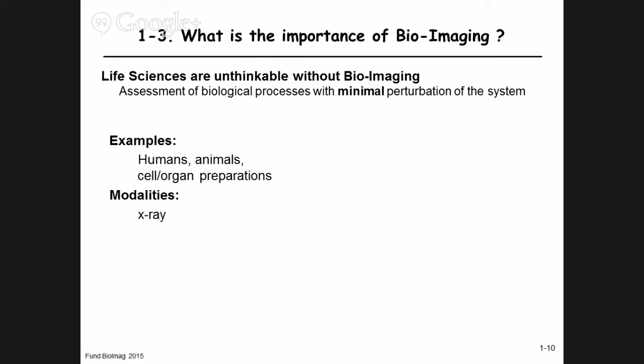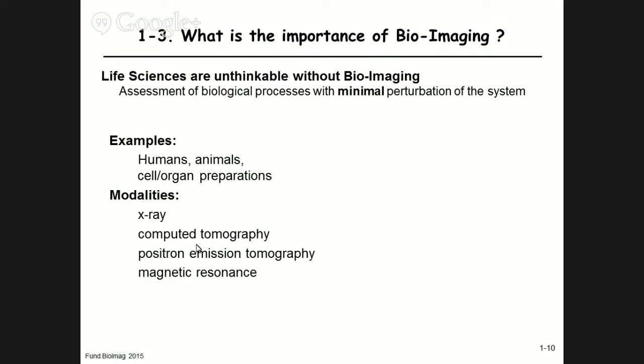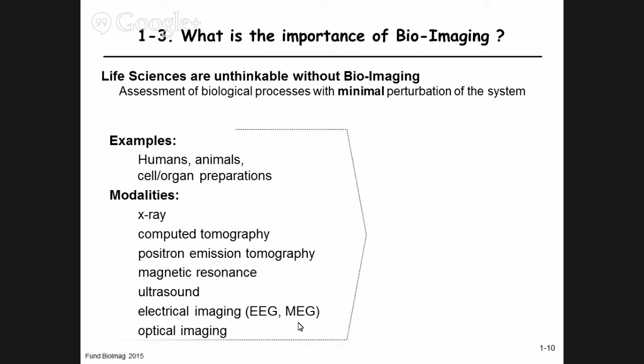Examples include human subjects, patients, animals, and transgenic animals. You can also study cell and organ preparations, or perfused organs. The modalities we'll cover in this course include X-ray, computed tomography, positron emission tomography, magnetic resonance, and ultrasound. We won't cover EEG, MEG, or optical imaging techniques here, as optical microscopy is covered separately.